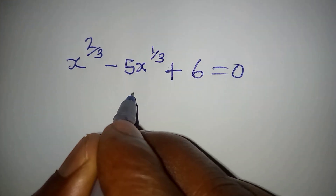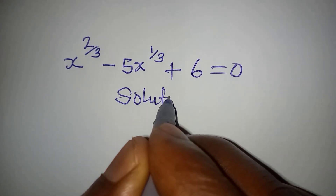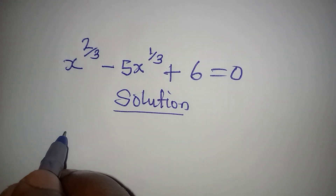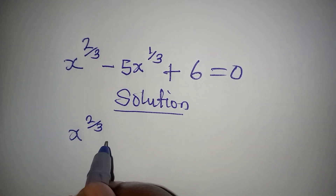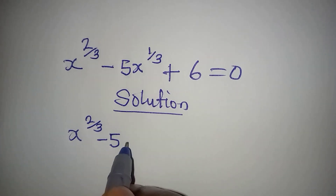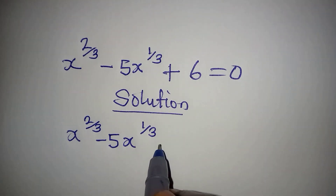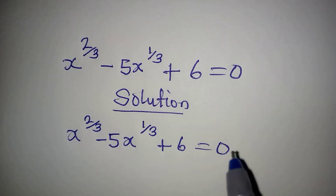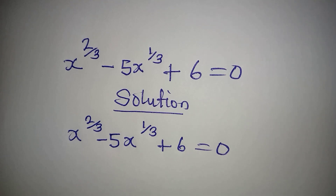Hello everyone. Let's provide the solution to this problem. We have x to the power of 2 over 3 minus 5x to the power of 1 over 3 plus 6 equal to 0, and we are looking for the value of x.